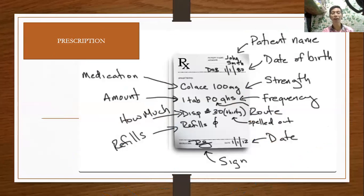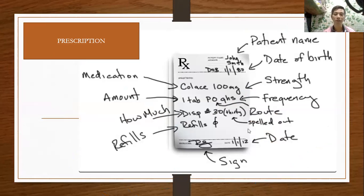Here is an example of a prescription. As you can see, it states the name of the patient, the date of birth, the medication, the amount or the prescription dosage, the strength, the frequency, the refill, the route, the date the prescription was given, and the signature of the physician. This is an example of a prescription.